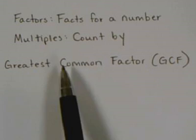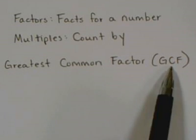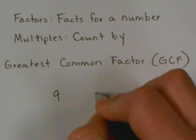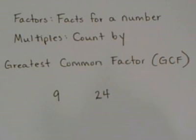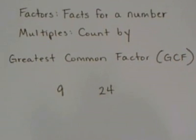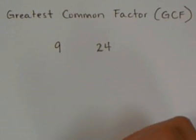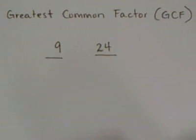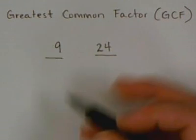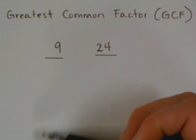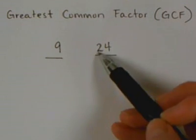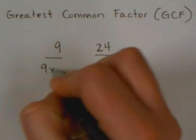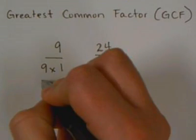So first let's find the greatest common factor or the GCF. Let's say I have 9 and 24. The first thing I'm going to do for each number is list all the factors for each number. Well, a factor is facts for the number, multiplication facts that will equal that number.